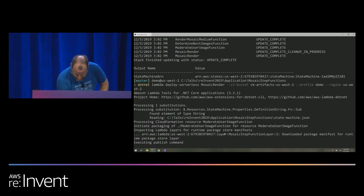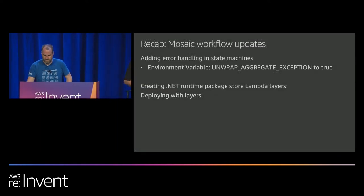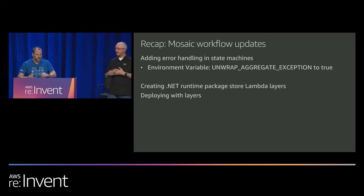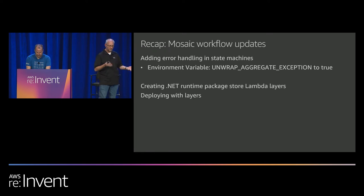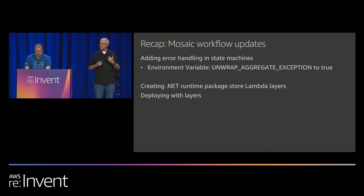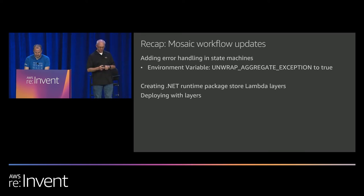The two key takeaways for the mosaic workflow: you can get at the real inner exception using the 'unwrap aggregate exception' environment variable, and the procedure of creating Lambda layers — consider using the package optimization switch with a CodeBuild image on Amazon Linux to get really fast cold start times.